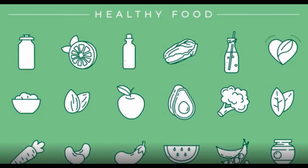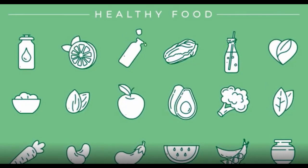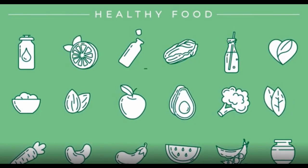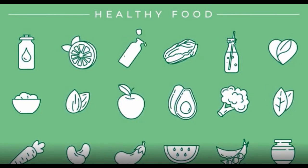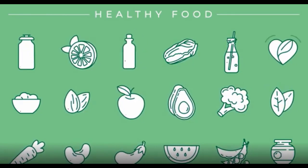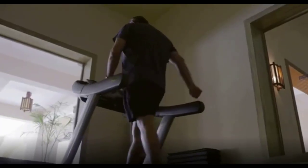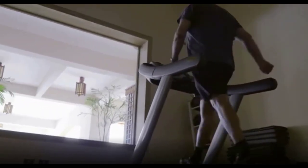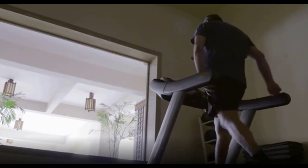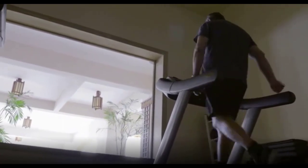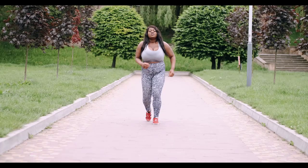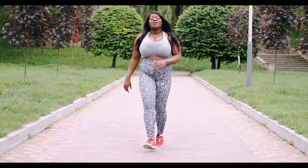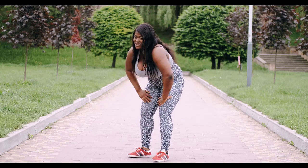Heart disease describes several problems that may affect your heart. The most common type happens when a blood vessel that carries blood to the heart becomes hard and narrow, keeping the heart from getting all the blood it needs. If you have heart disease, you may suffer from a heart attack, heart failure, sudden cardiac death, angina, or abnormal heart rhythm. Heart disease is the leading cause of death in the United States.